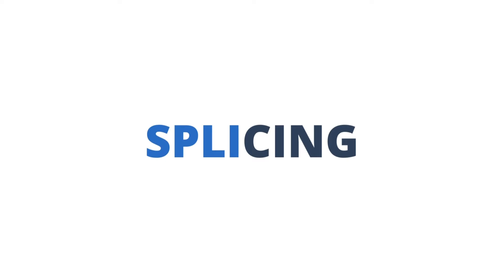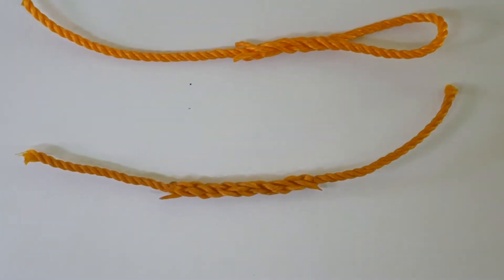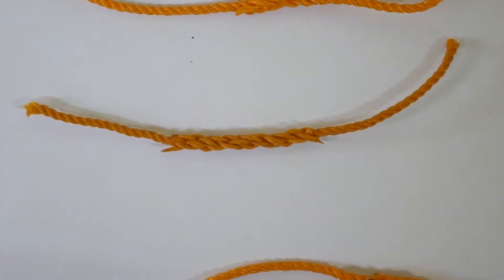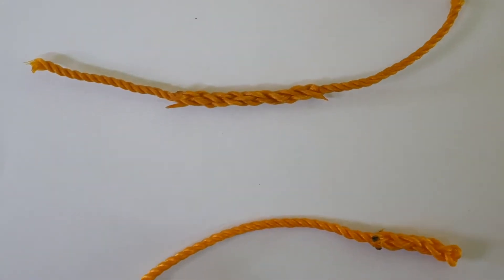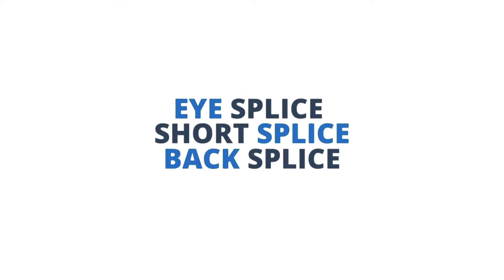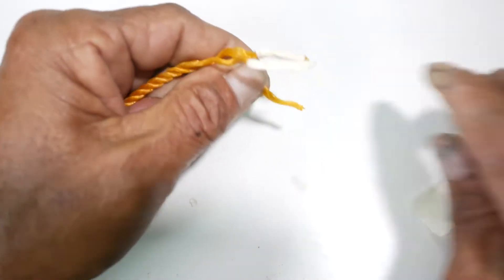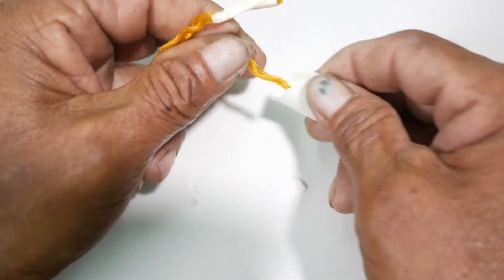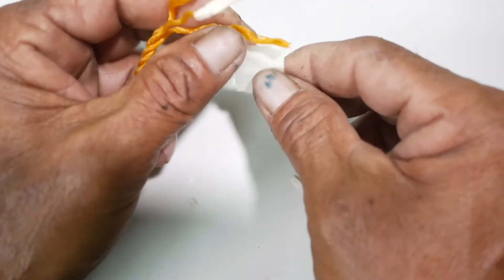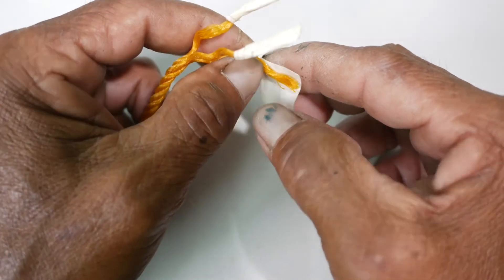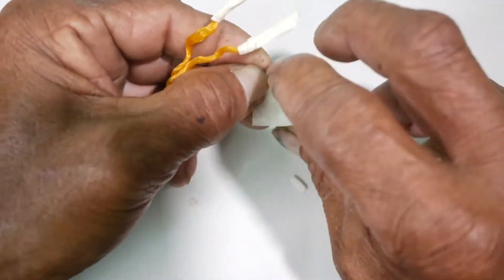Splicing is also a means of joining two ropes together. However, this method is chosen over bends if you are planning to join ropes permanently. We will show you how to perform an eye splice, short splice, and back splice. To perform each splice, you must first unravel the three strands of your rope. You do not want to unravel each strand further. To prevent that, we will wrap each end of the strand with a tape.